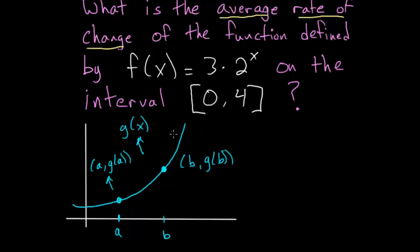And so the average rate of change would just be the slope of the secant line between these two points. So we can come up with a formula for the slope of this secant line by recognizing that we can make a right triangle here.